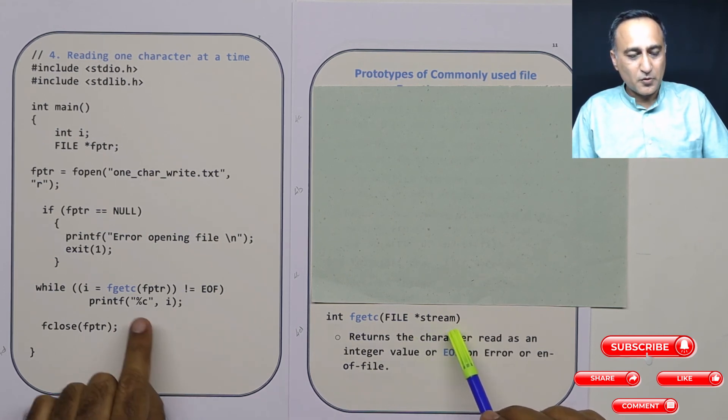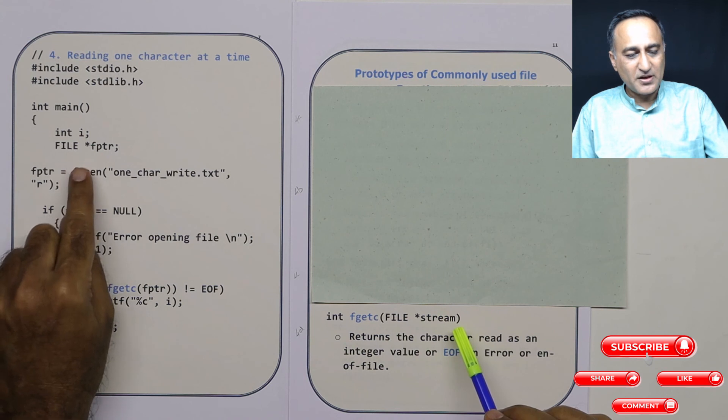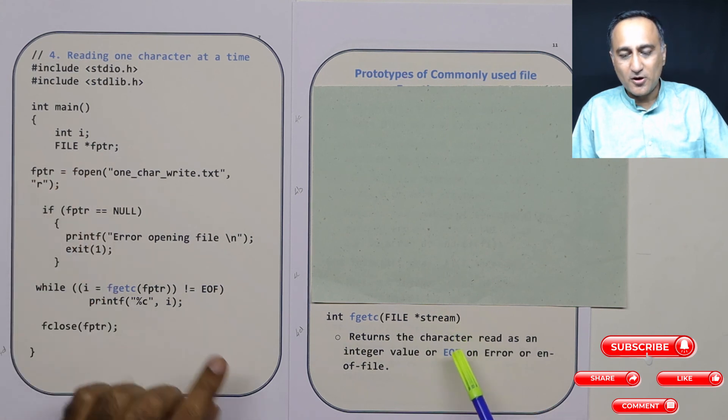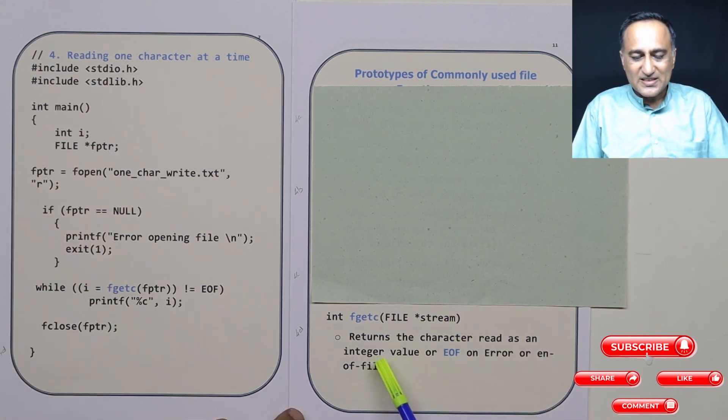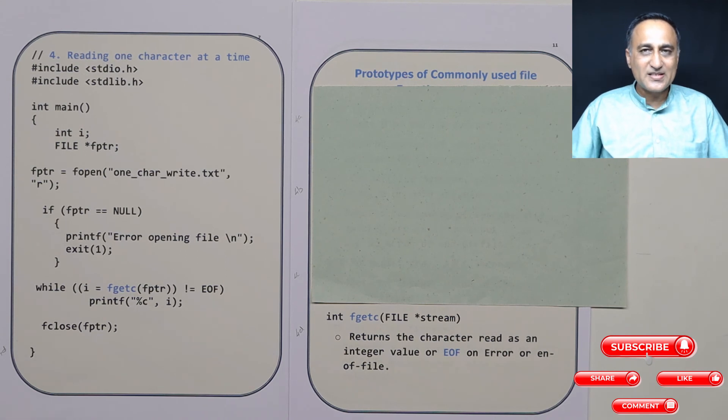Stream indicates source of input. In this case stream is fptr, fptr happens to be your file. So what happens is fgetc reads one character at a time, returns the ascii value of that particular character as an integer.